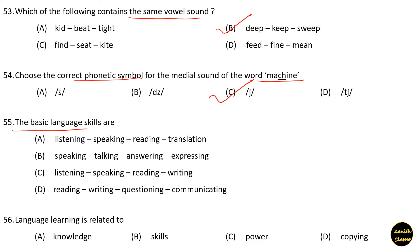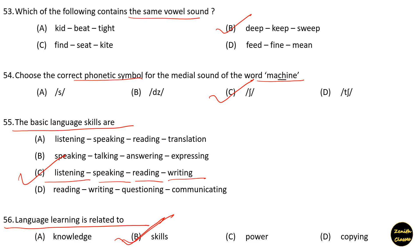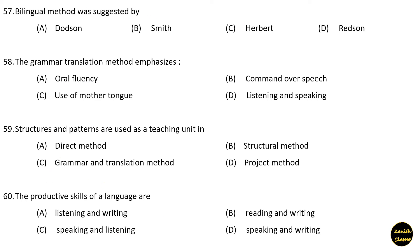Next question: The basic language skills are listening, speaking, reading, and writing. Option C. Next question: Language learning is related to — knowledge, skills, power, or copying? Option B is the correct answer — language learning is related to skills. Next question: The bilingual method was suggested by C.J. Dodson.